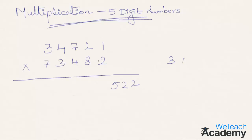Step four: 4 into 2 is 8, plus 3 into 1 is 3; 8 plus 3 is 11, plus 7 into 8 is 56; 11 plus 56 is 67, plus 4 into 2 is 8; 67 plus 8 is 75, plus 3 carried forward gives 78. Write 8, carry 7. Step five: 3 into 2 is 6, plus 7 into 1 is 7; 6 plus 7 is 13, plus 8 into 3 is 24... summing up to 79, plus 7 carried forward gives 86. Write 6, carry 8.